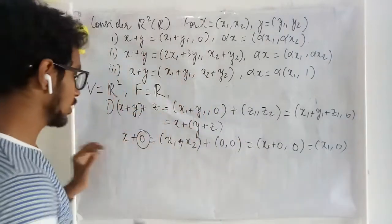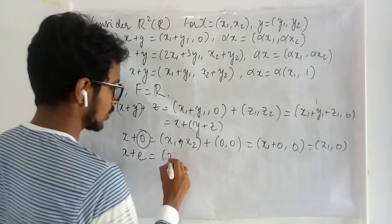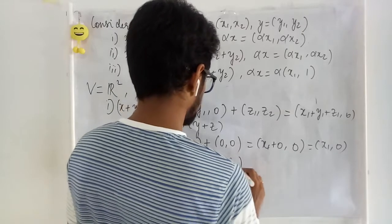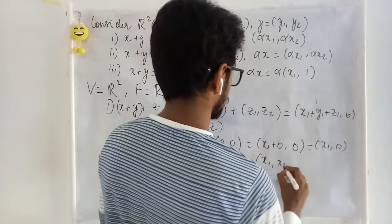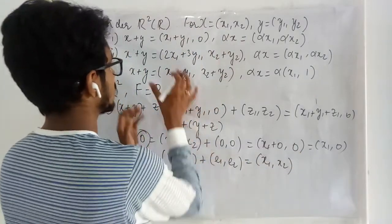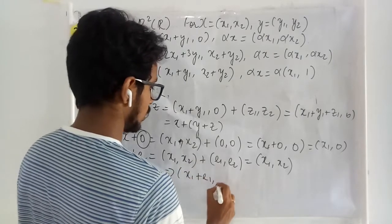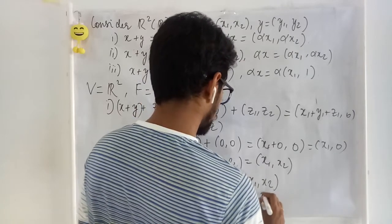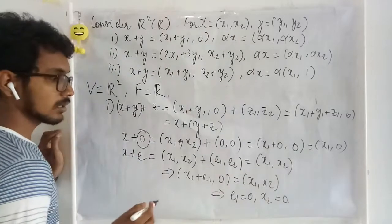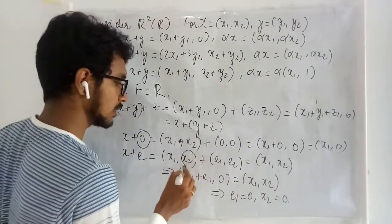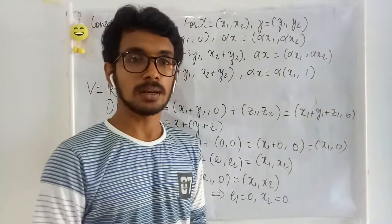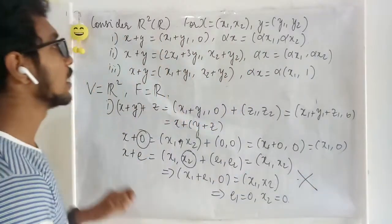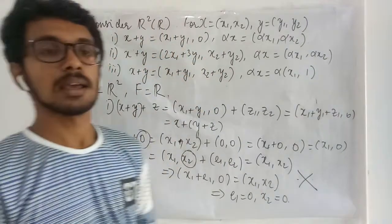So zero is not the identity element. Suppose we try some other element e₁, e₂: we need x₁, x₂ plus e₁, e₂ to give back x₁, x₂. Under this addition that means x₁ + e₁ = x₁, so e₁ must be 0, and x₂ must be 0. This means the identity only exists if the second entry is 0, which cannot hold for all elements in R². Therefore the identity axiom is not satisfied and R² over R is not a vector space under this operation.